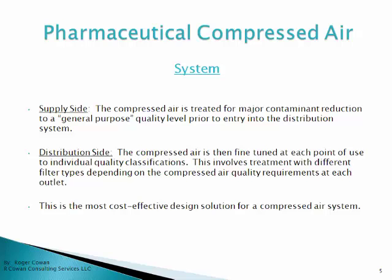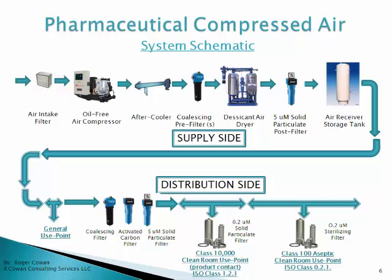On the supply side, the compressed air is treated for major contaminant reduction, bringing the air down to a general purpose quality level before entering the distribution system. On the distribution side, the compressed air is fine-tuned at each point of use, bringing it down to individual quality classifications. This is done by treating the air with different filter types depending on the compressed air requirements at each outlet. This is the most cost-effective design solution — bringing the air on the supply side down to general purpose and then fine-tuning it to different quality levels on the distribution side, as opposed to bringing it all the way down to a very high quality on the supply side.